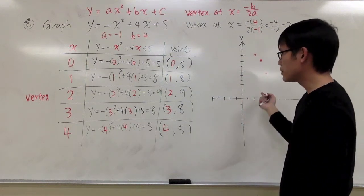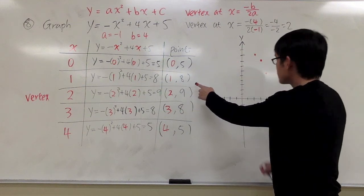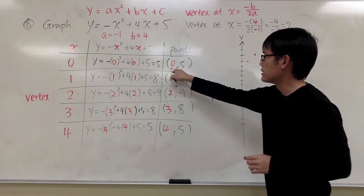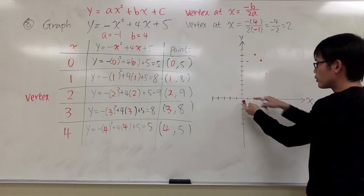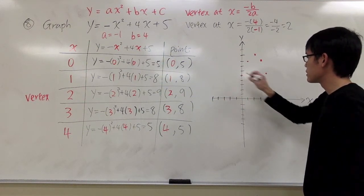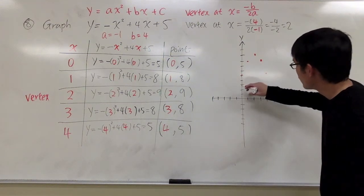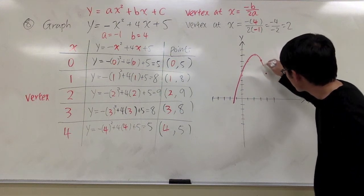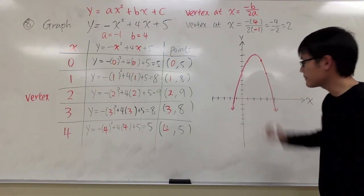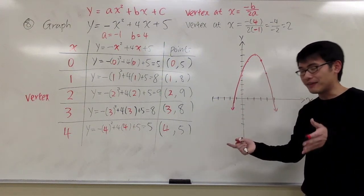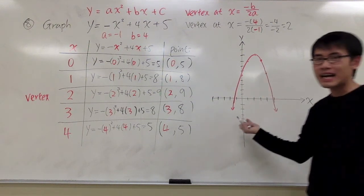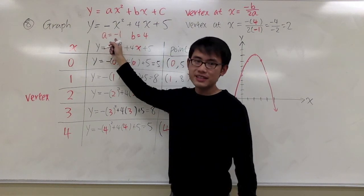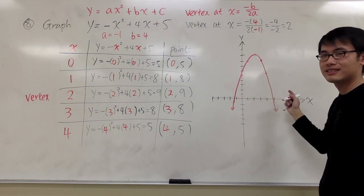Now we can come back and finish the graph. Plot (1, 8) and (0, 5). Then just connect these 5 points with a nice parabola. Notice that this parabola is open upside down — like a sad face. We technically know that because the number in front of x squared is negative. If the a value is negative, you can expect this kind of downward-opening shape for the parabola. And that's it.